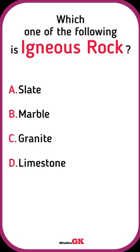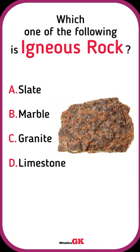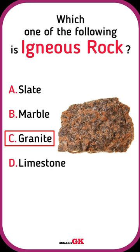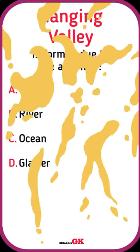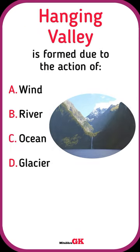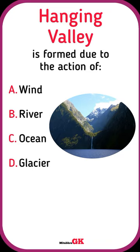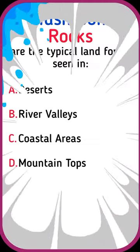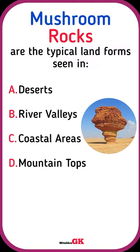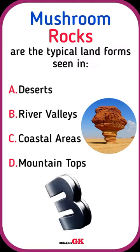Which one of the following is igneous rock? Granite. Hanging valleys are formed due to the action of glacier. Mushroom rocks are the typical landforms seen in